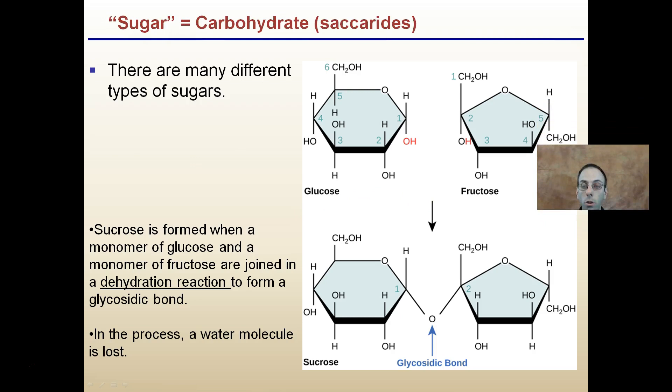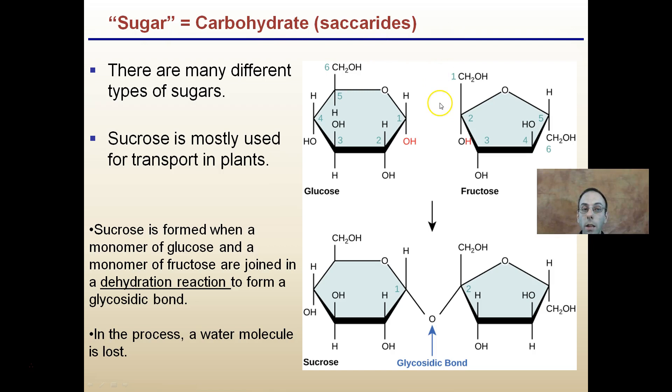Remember, sugar is carbohydrates, and carbohydrates are saccharides — there are many different types of sugars. Sucrose is mostly used for transport in plants. Sucrose is formed when a monomer of glucose and a monomer of fructose are joined together through the process of dehydration synthesis. Dehydration refers to the removal of water: a hydroxide group and a hydrogen ion — OH and H — come together to form water, losing that water molecule and creating the bond that joins the two monomers to form sucrose, which is a disaccharide.